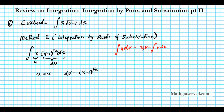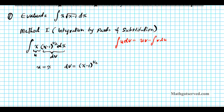Now we have u and dv. In the integration by parts formula, I need u, v, and du. So let's find du. Differentiating u equals x, du is simply 1 dx. To find v, I'll integrate both sides of the dv equation. I need to find the antiderivative of x minus 1 raised to the 1/2 dx.